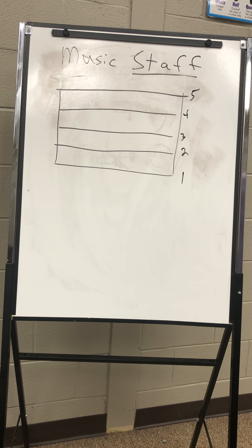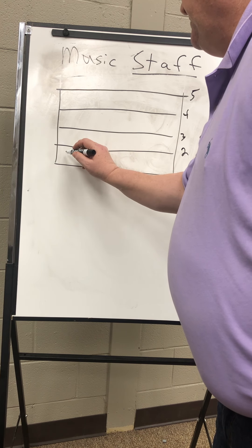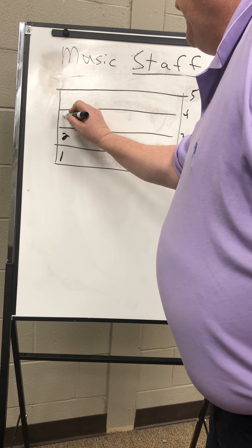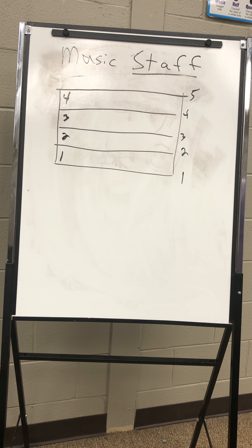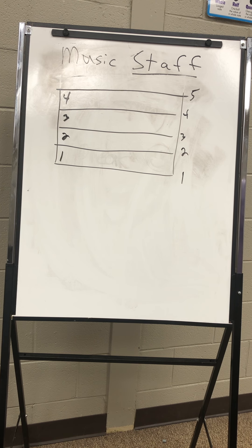So we have five lines. Our spaces — we have four spaces. We count the spaces from bottom to top as well. This is what our musical staff consists of: a system of lines and spaces that continue on. The person who came up with this system decided it was better to have five lines and four spaces so that when the musician looks at it, it's not as confusing. We can also put ledger lines in for notes that are above or below the staff, and we'll talk about ledger lines later.